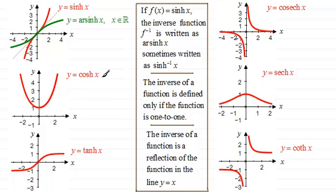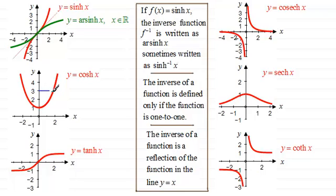Now for y equals cosh x, this is a special case because it must be one-to-one to have an inverse. For any x in the domain there is one y, but for a given y value — say y equals 3 — there are two corresponding x values. So cosh x is not one-to-one as it stands. We therefore define a new restricted domain of x greater than or equal to zero, removing the left half of the graph.